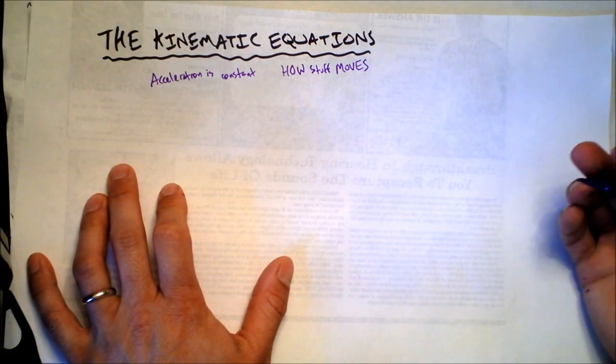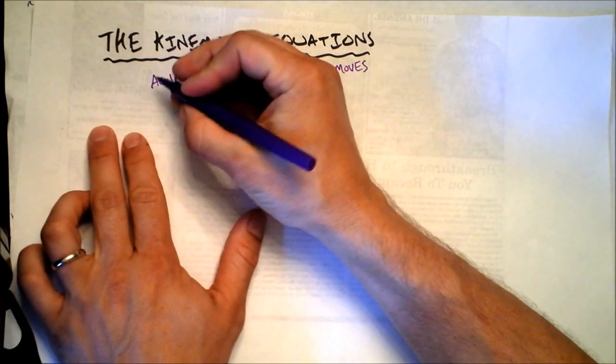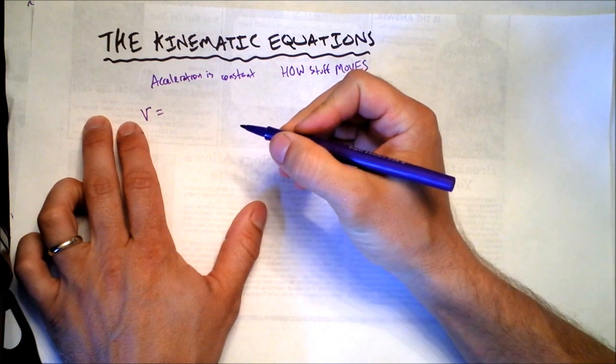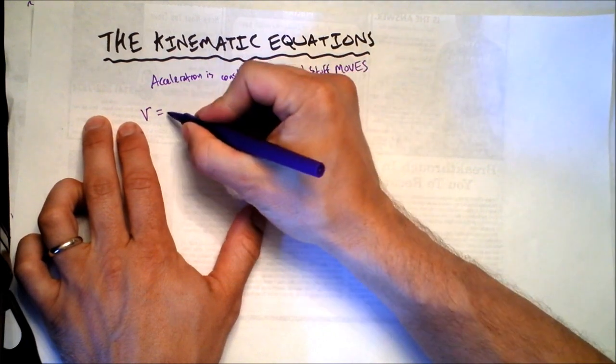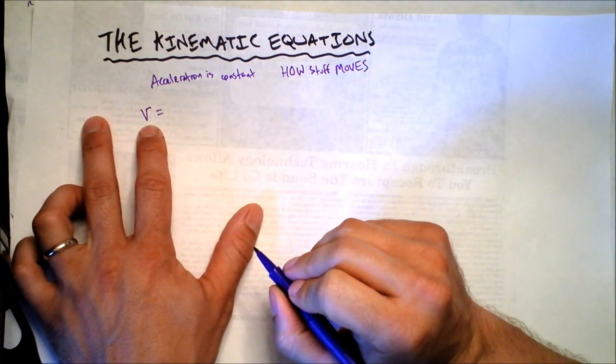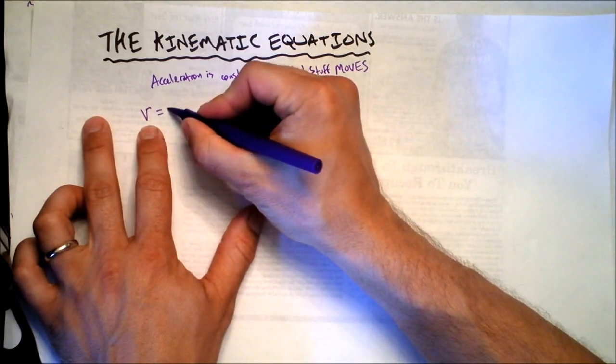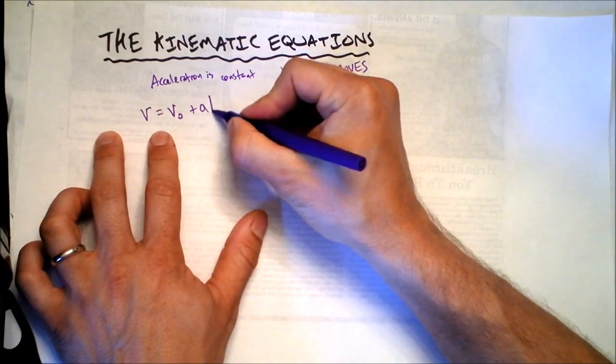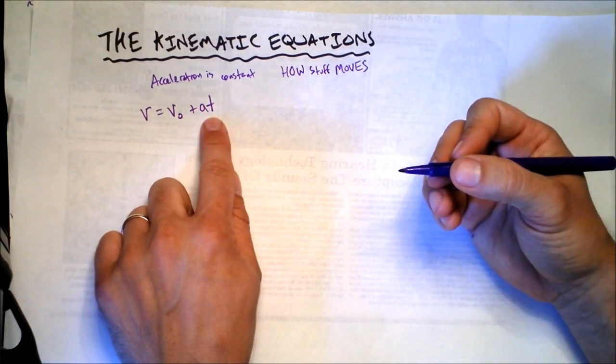I'll write the four kinematic equations down and you want to memorize these. We'll talk about how they work. This first one is the definition of acceleration. It says that your velocity at any given time is equal to your starting velocity plus how much you've been accelerating multiplied by how long time has been going on.